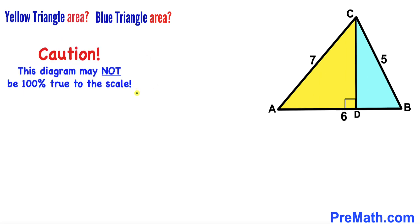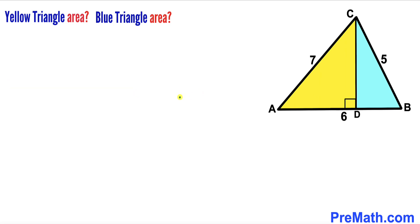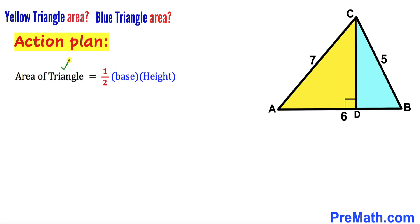Please keep in mind that this figure may not be 100% true to scale. Let's get started. Our action plan: since we are interested in calculating the area of the yellow triangle and the blue triangle, let's recall the area of a triangle formula — area equals one-half times base times height. For the yellow triangle, CD is the height and AD is the base. Likewise, for the blue triangle, CD is the height and BD is the base.